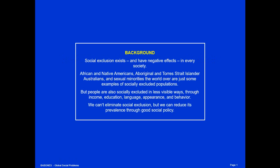Social exclusion exists and has negative effects in every society. African and Native Americans, Aboriginal and Torres Strait Islander Australians, and sexual minorities the world over are just some examples of socially excluded populations. But people are also socially excluded in less visible ways — through income, education, language, appearance, even behavior.